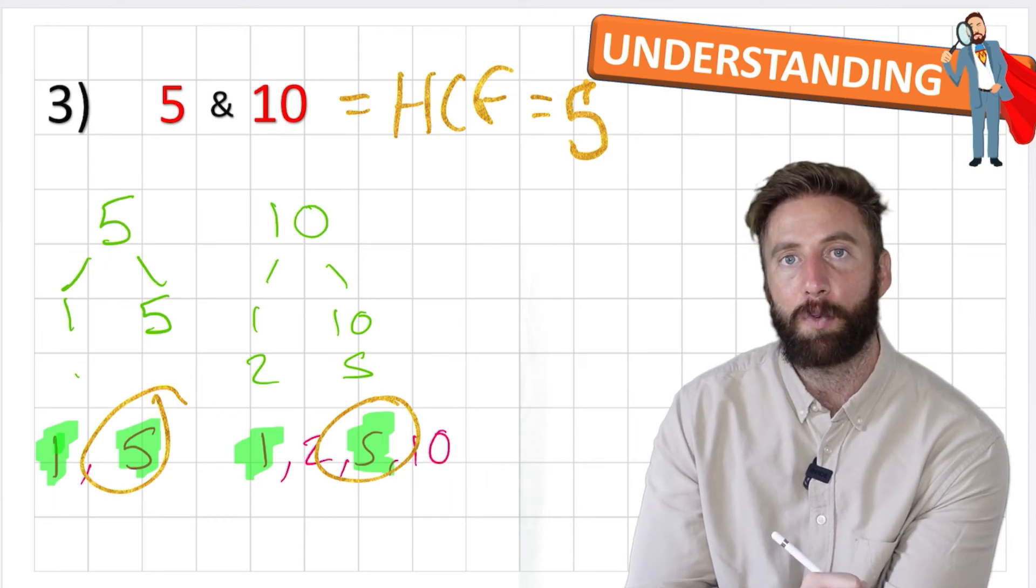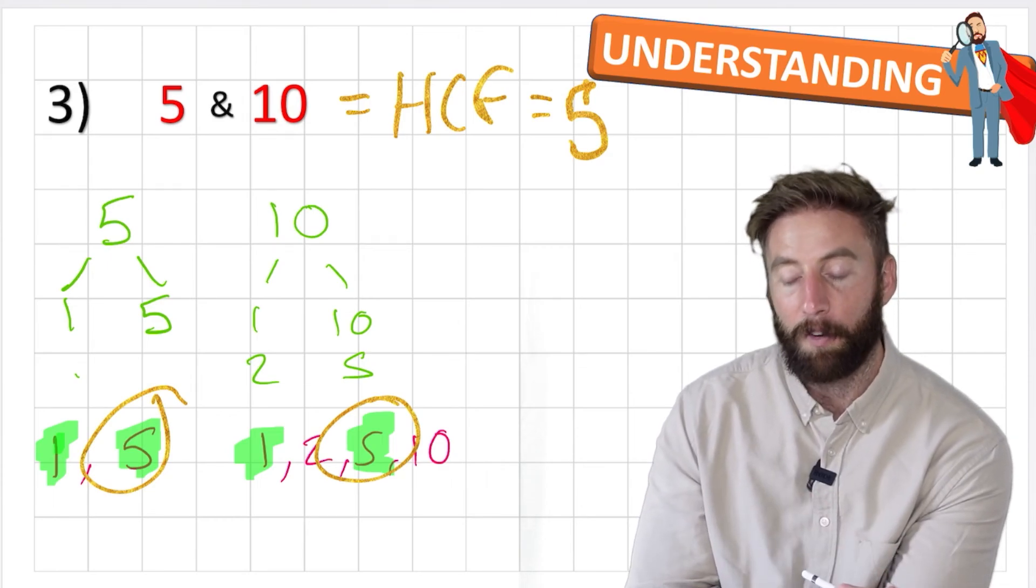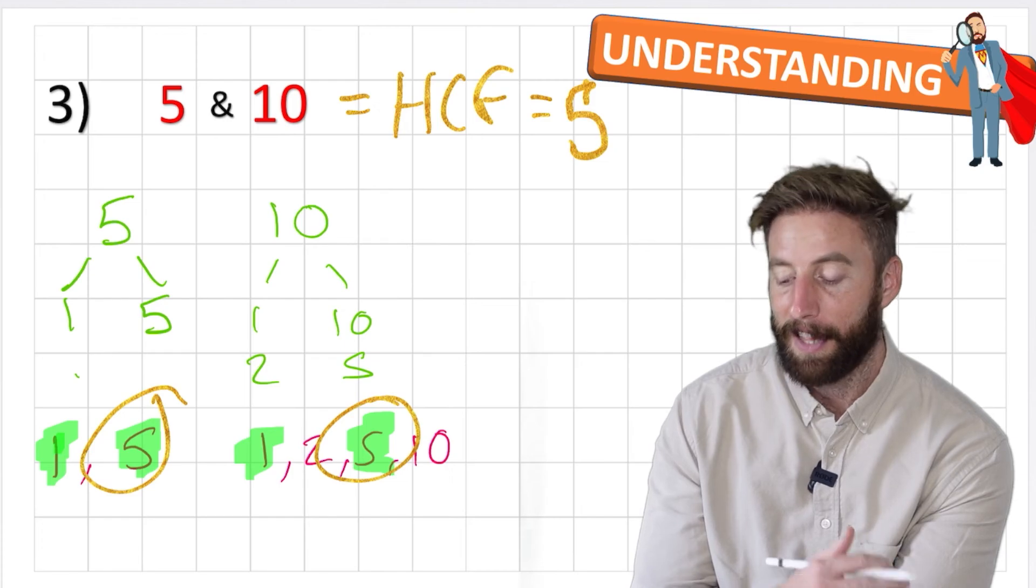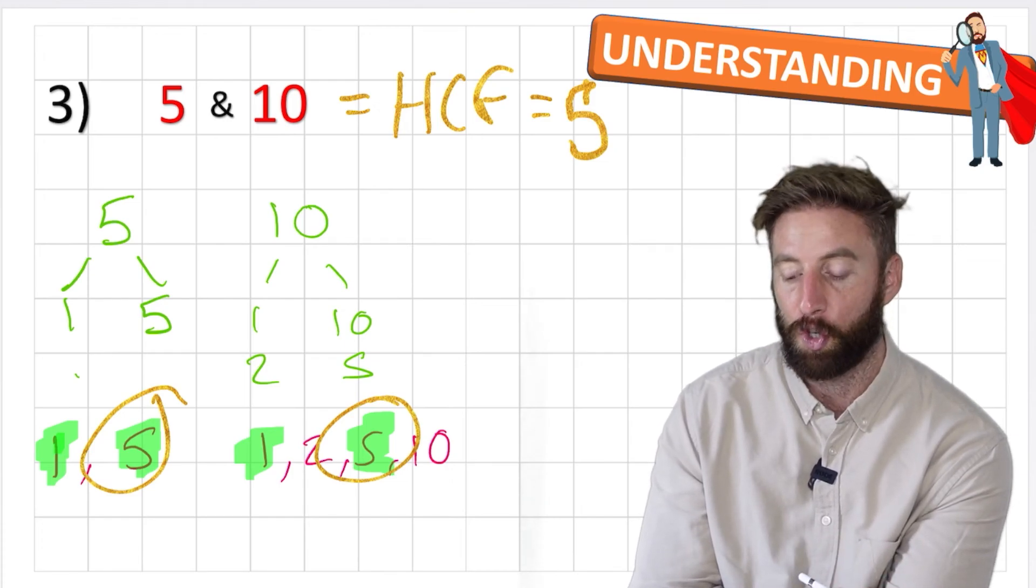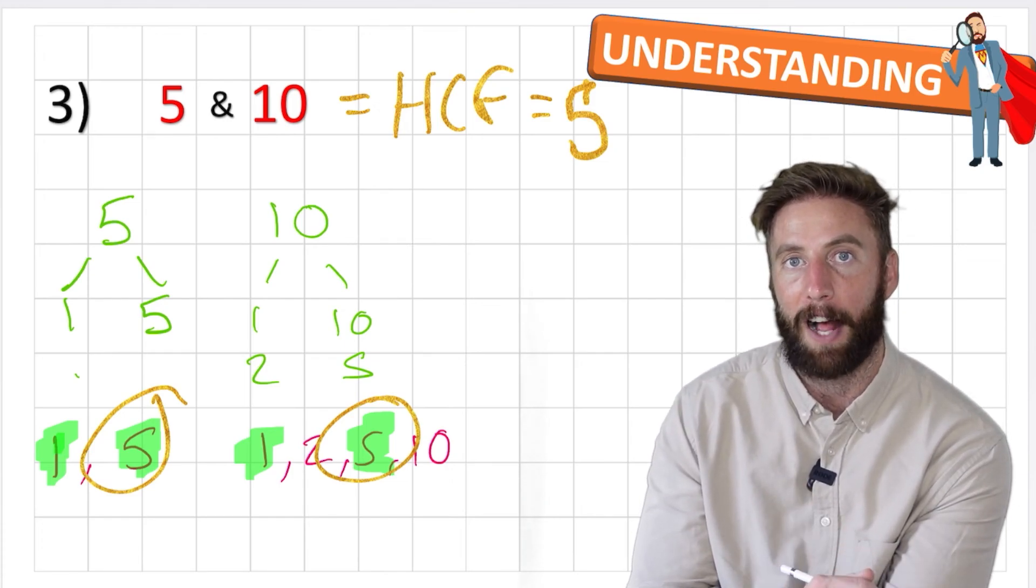Awesome. Okay well hopefully this was useful for you. So what we're looking for, the highest common factor, first look for those factors. Then let's find the common factors between the two and then just look for that highest value, the biggest number.